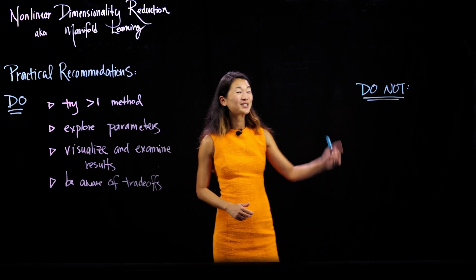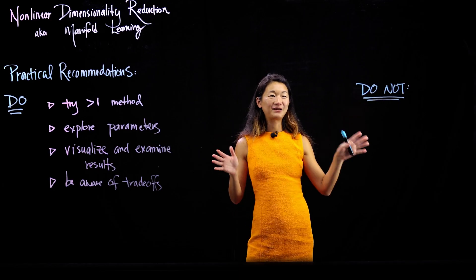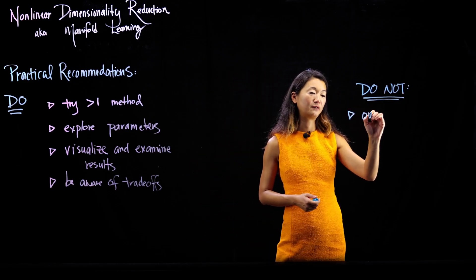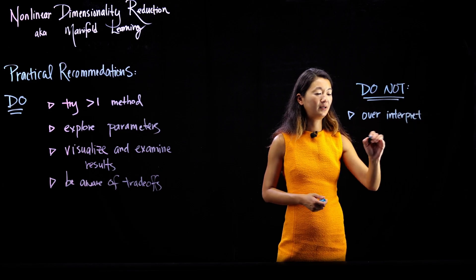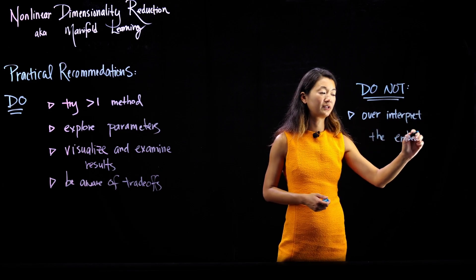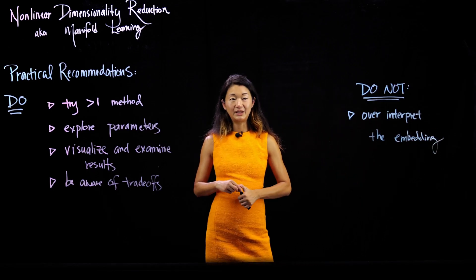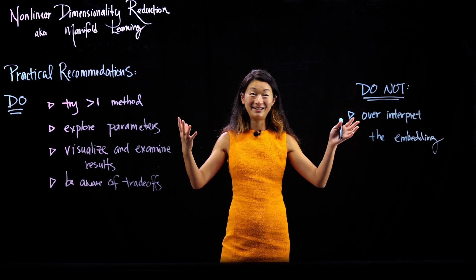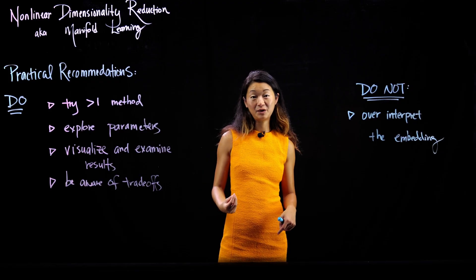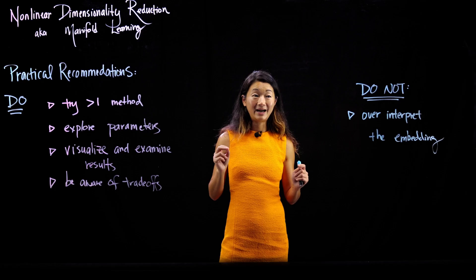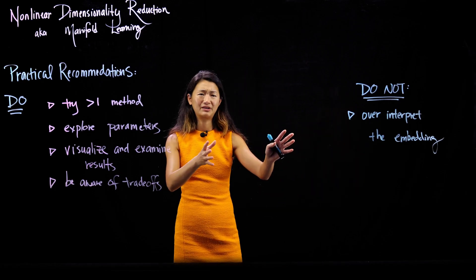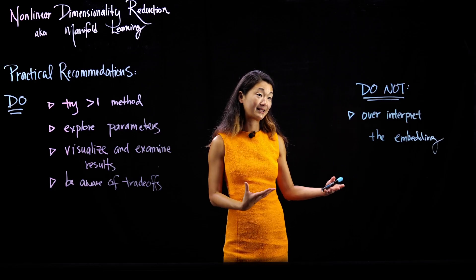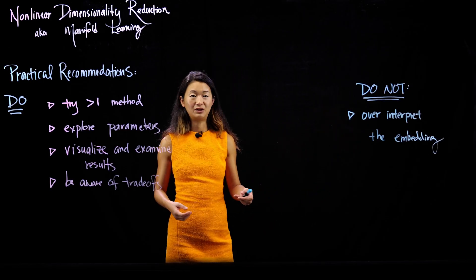That covers my list of practical recommendations of things you should definitely be doing. My 'do not' list is significantly shorter. The only thing I would caution you against is: do not over-interpret the embeddings. Don't take the embeddings too literally or too seriously. We're always reducing your data, and there's a limit to how much it can be reduced. It is always possible to reduce it too much, so that things end up close together in the embedding that have nothing to do with each other — an artifact of how the embeddings were computed rather than something real in the data set.